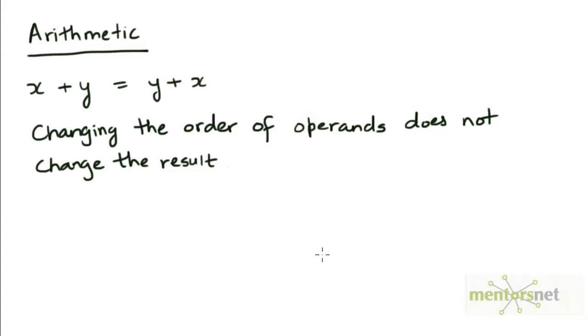Let's try to derive some analogies between arithmetic and set theory. In arithmetic, if we look at the addition operation, we know that x plus y is equal to y plus x for any two numbers x and y.